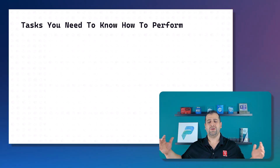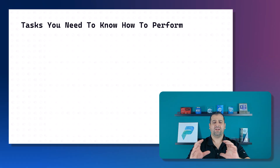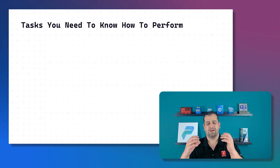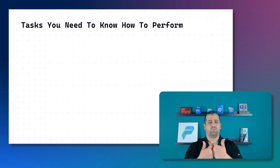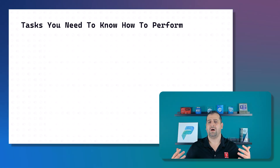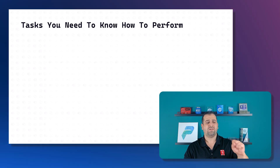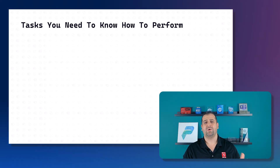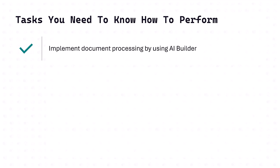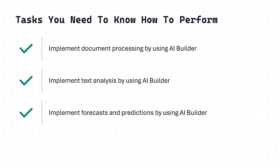Now let's talk about what you need to know in order to pass the certification. When you start the Applied Skill, you are given one, two, or three tasks that you need to accomplish — kind of like being assigned a project in a meeting. You might not get all of them; you might get one or all four. You need to know how to implement document processing using the AI Builder, implement text analysis using the AI Builder, implement forecasts and predictions using the AI Builder, and integrate AI Builder capabilities into a Power Apps app.